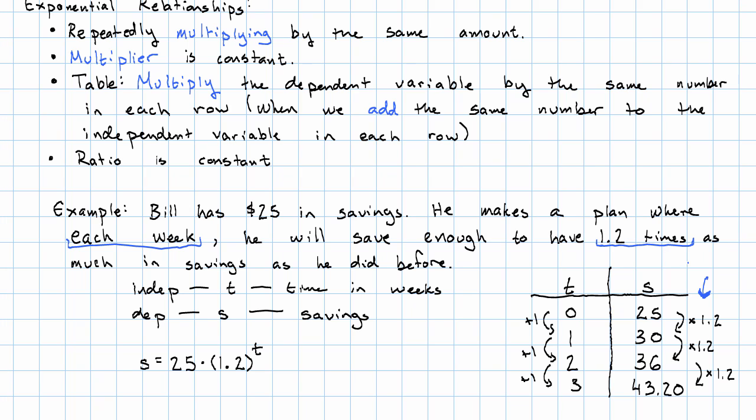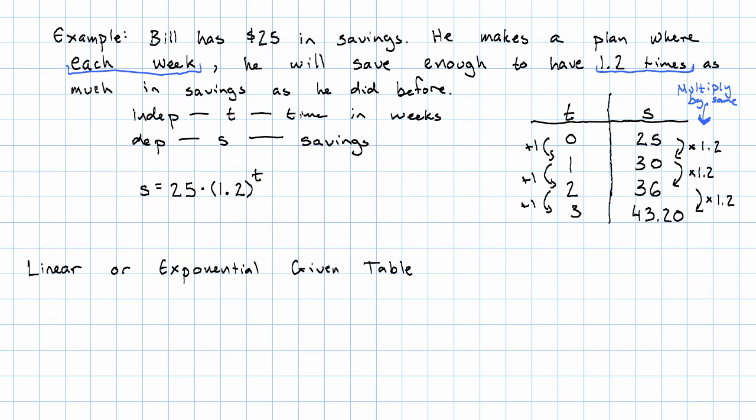In the table, we see we multiplied by the same number. If we just met this table, if we're given a table and we want to decide whether the relationship is linear or exponential, here I'm just going to call the variables x and y because they don't represent anything in particular. Well, we noticed that the changes in x are constant in both tables.